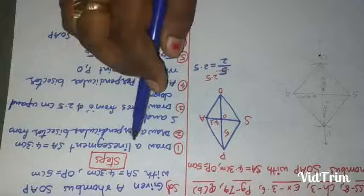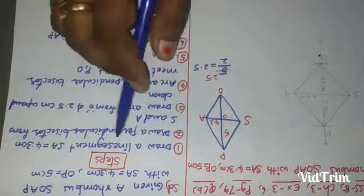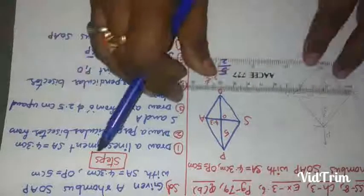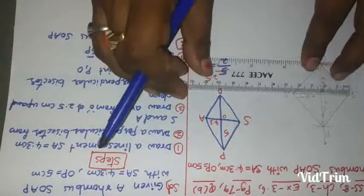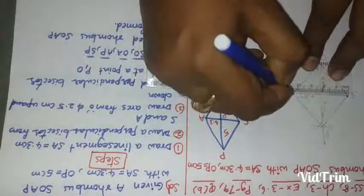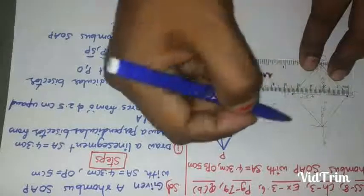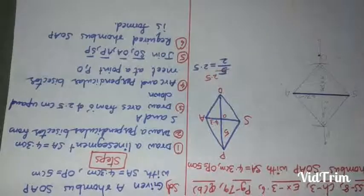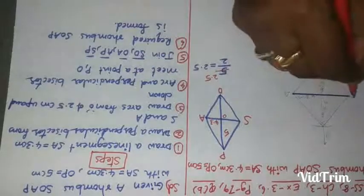Let us go to steps and construction. First, draw line segment SA. It costs how many centimeters? 4.3 centimeters. First 2.10, the other point on 4.3. After four three lines, join line segment SA. This is line segment SA of 4.3 centimeters.